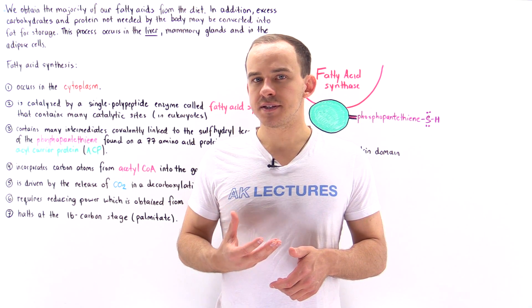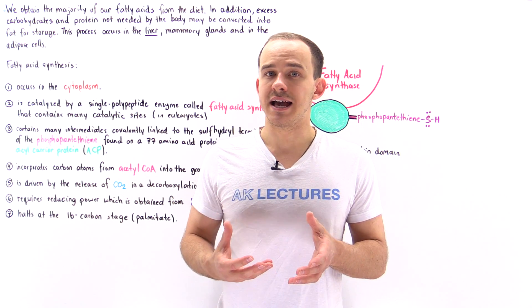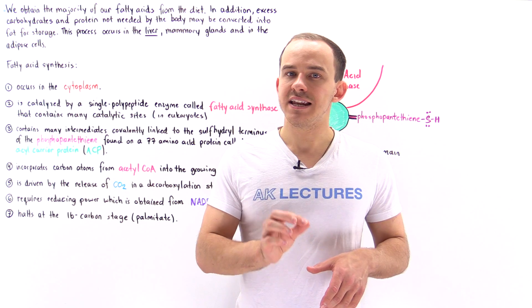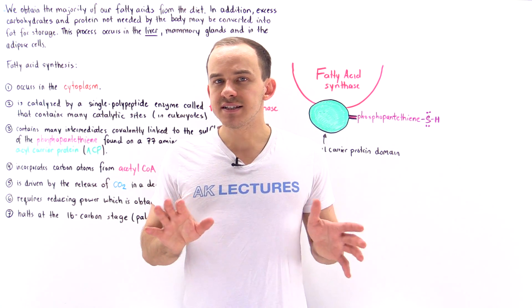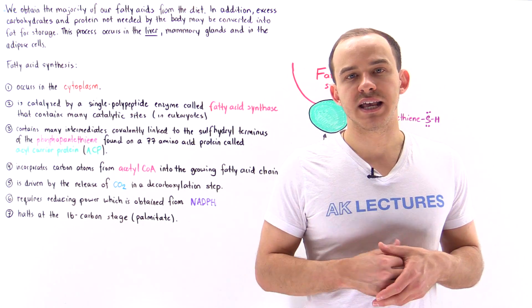So fatty acid synthesis takes place predominantly in our liver cells in hepatocytes. And to a smaller extent, it also takes place in lactating mammary glands and in adipose tissue. So in the next several lectures, we're going to look at the details of this complicated process.